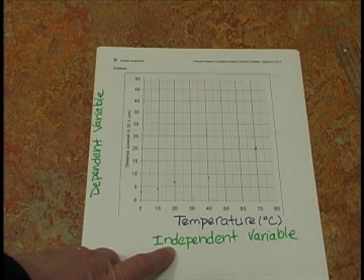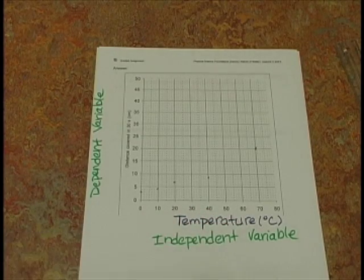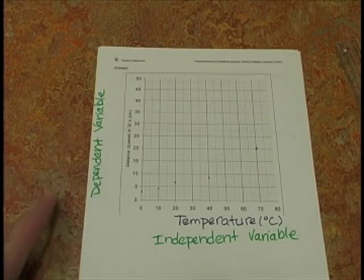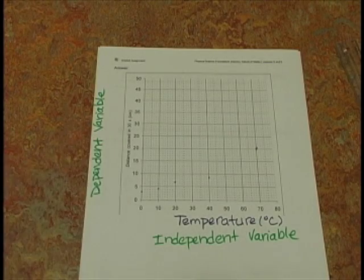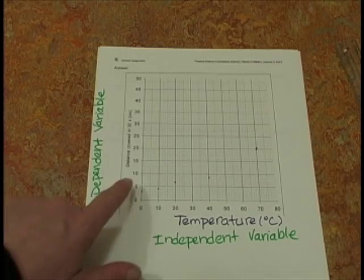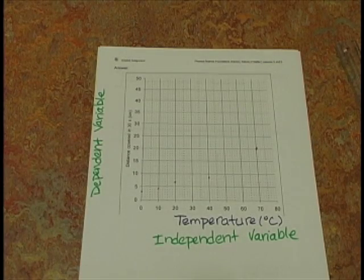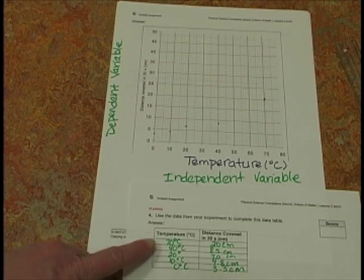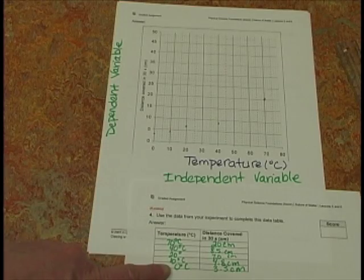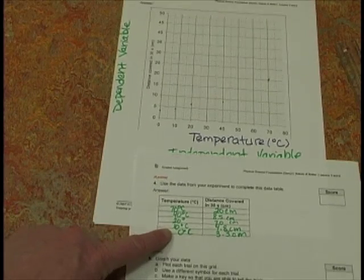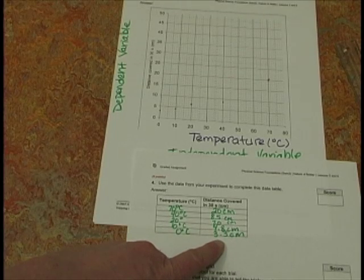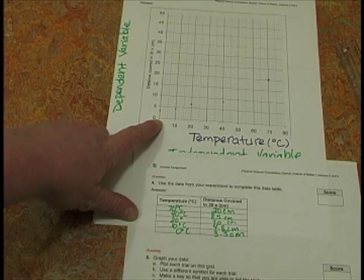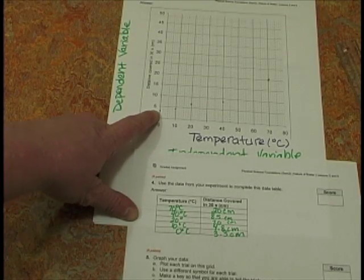The independent variable is what we decide before the experiment is performed — we decided to use different temperatures. The dependent variable depends on what happens in the experiment; it's the results. Using the table from question 4, I plotted points. For example, at 0 degrees Celsius, the liquid ran 3.3 centimeters, so I go to 0 on the temperature scale and go up 3.38.